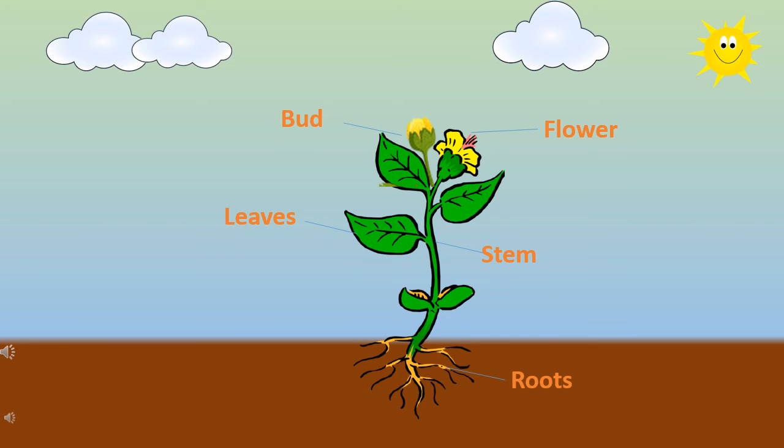So, children, we have seen a growth of a plant. Now, this growth of a plant is also known as germination. Germination process of a plant.